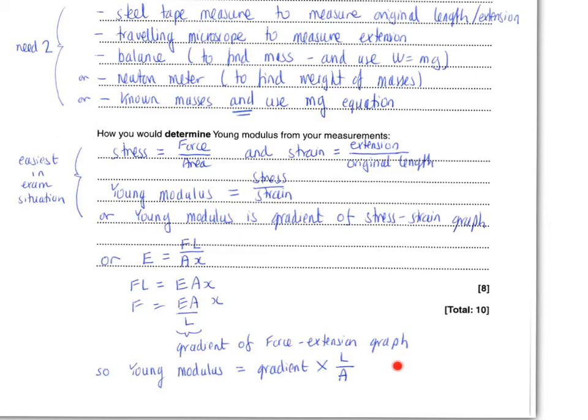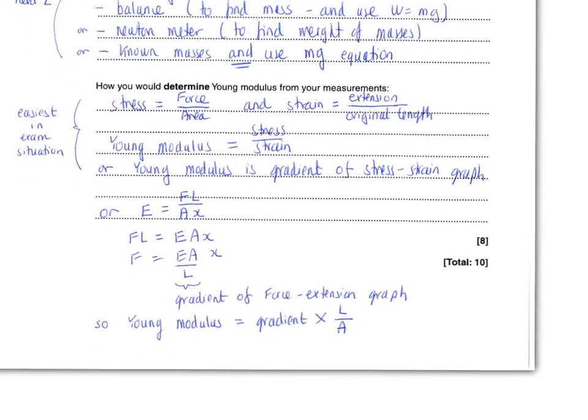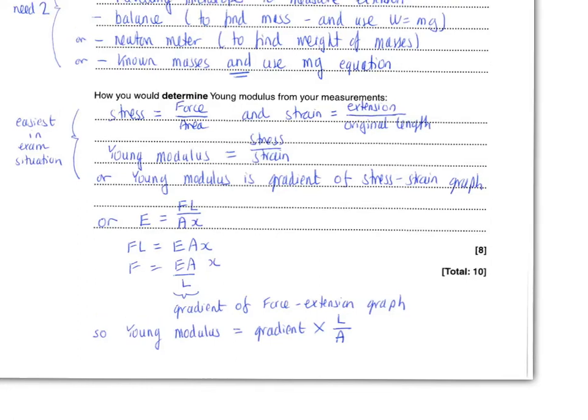I think in the exam situation, and luckily Alphcath wrote these out and she picked on the same ones, the easiest way to describe in the exam is not what we did. What we did was we plotted a force extension curve, and by messing around with the equations, we saw that the Young modulus is the gradient of that force extension curve times L over A. That's the easiest way.